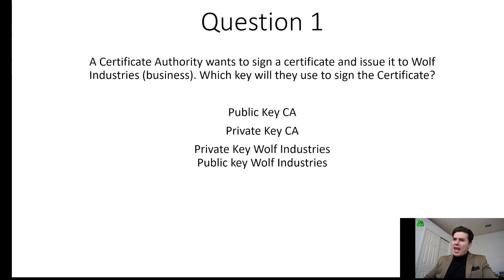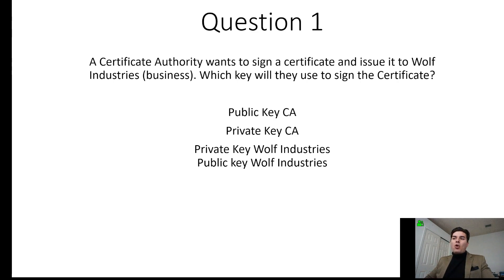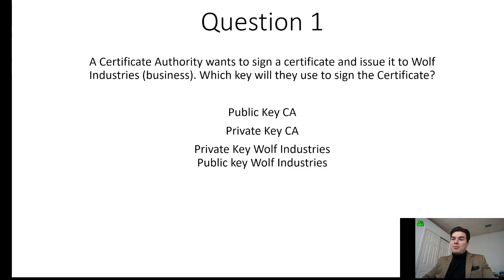Question number one: a certificate authority wants to sign a certificate and issue it to Wolfe Industries, a business — which key will they use to sign the certificate? Anytime a certificate is signed, it's always signed with the private key. Since the certificate authority is signing this certificate, it's going to be the private key of the certificate authority. If Wolfe Industries was signing this certificate, then it would be signed with Wolfe Industries' private key.